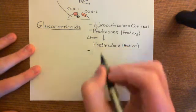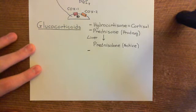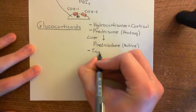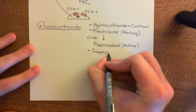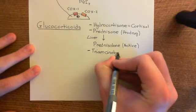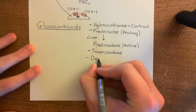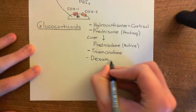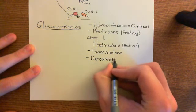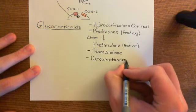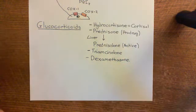Another example of a glucocorticoid is a drug known as triamcinolone. And then finally, another famous example is dexamethasone. So four examples: hydrocortisone, prednisone (which has to be activated to prednisolone), triamcinolone, and dexamethasone.